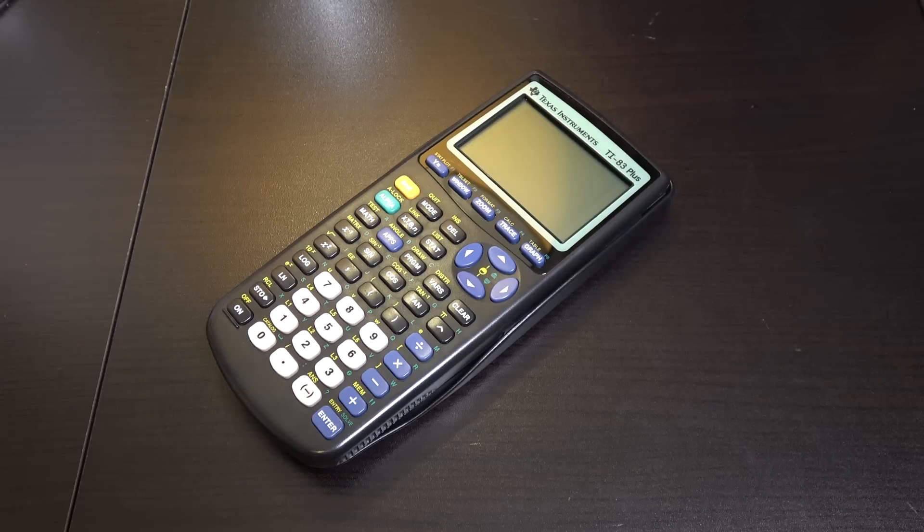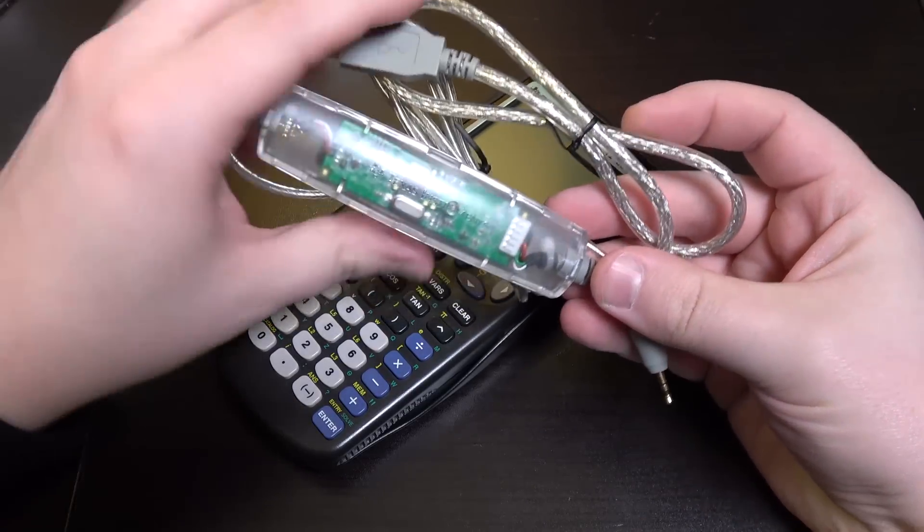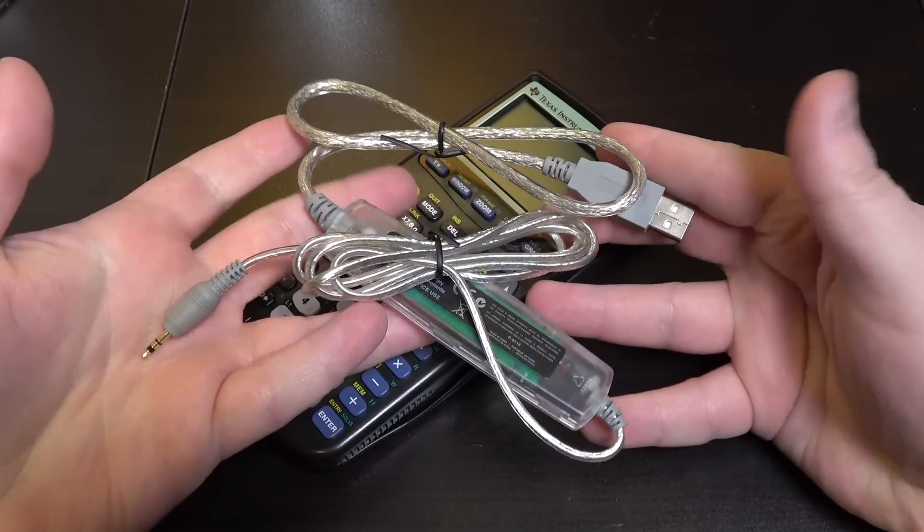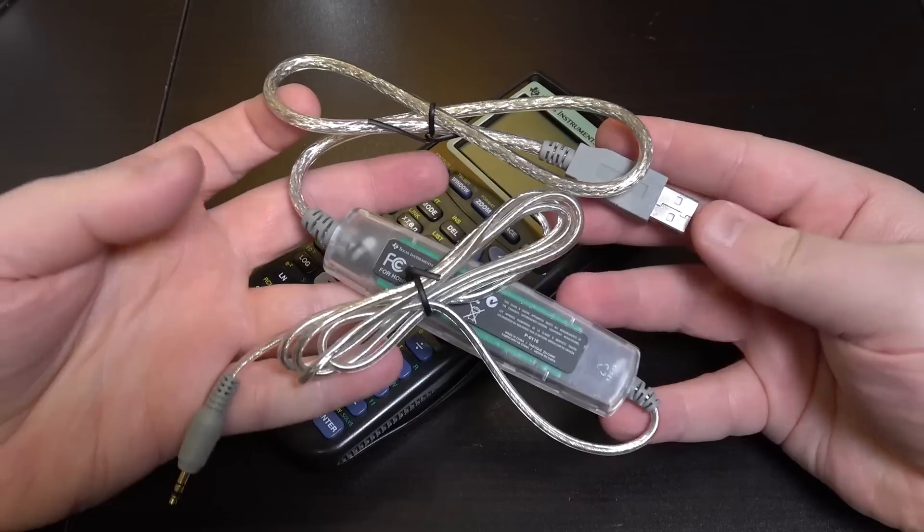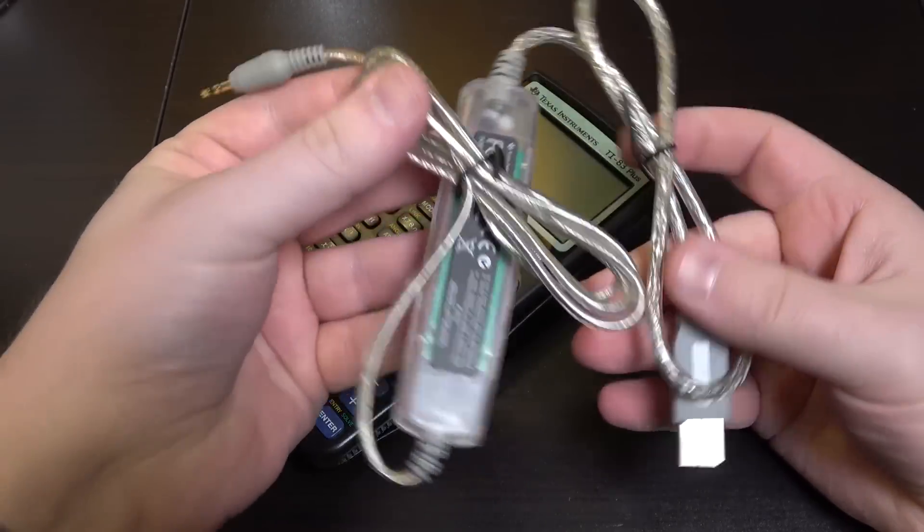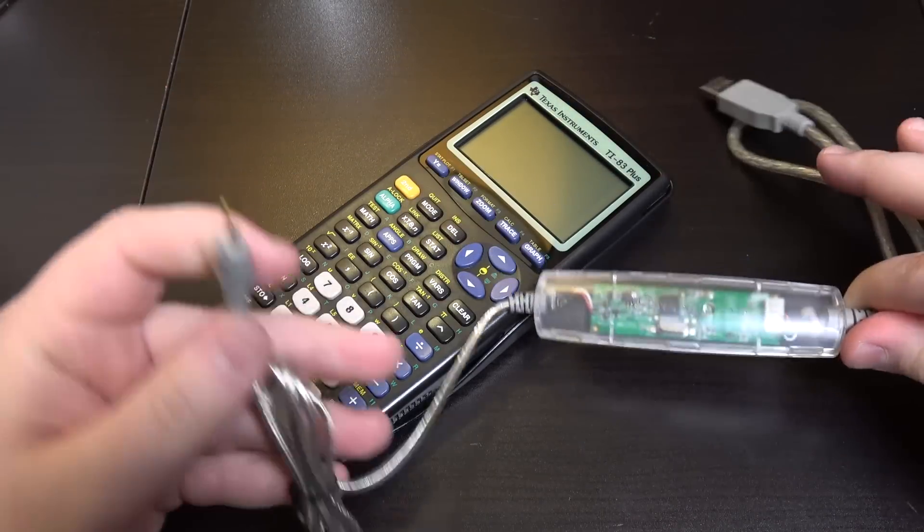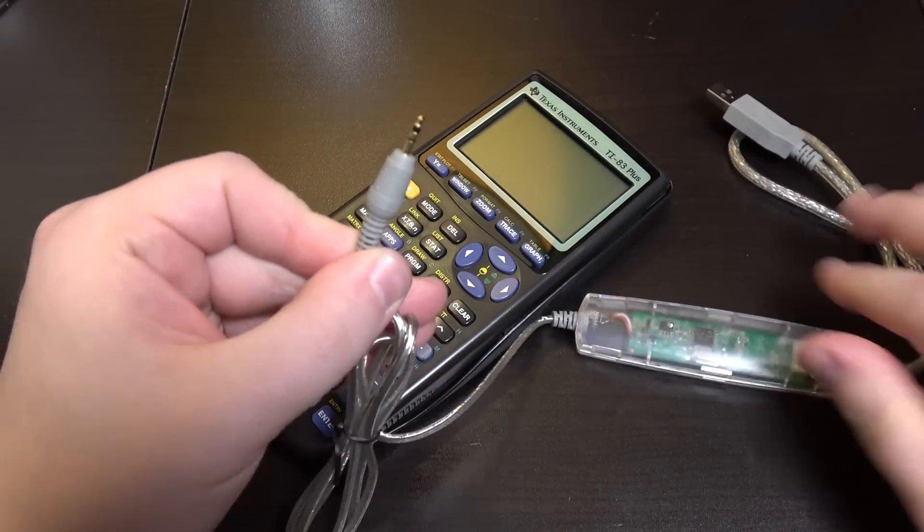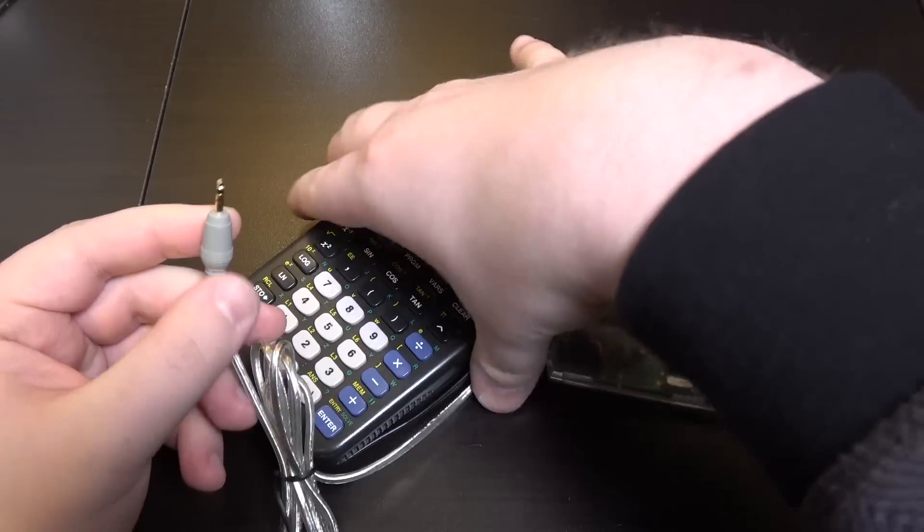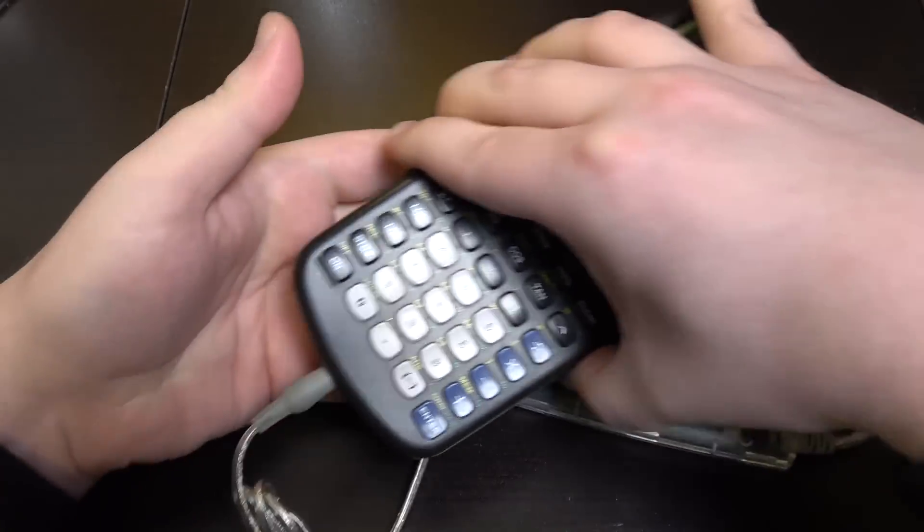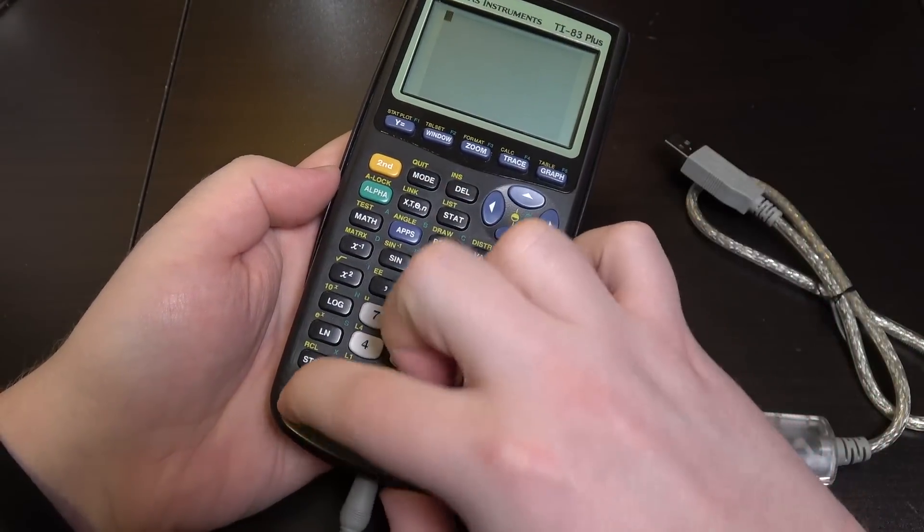So pretty much the only thing you're going to need, other than the calculator and a computer, is one of these Texas Instruments graph link cables. This is the USB edition. The one I had back in the day I think was serial. But yeah, they make them in USB now and they work the same, and they're obviously easier to get working on modern hardware. So it has this little analog-looking jack. And you plug that right here into the bottom of the calculator and then just turn it on.